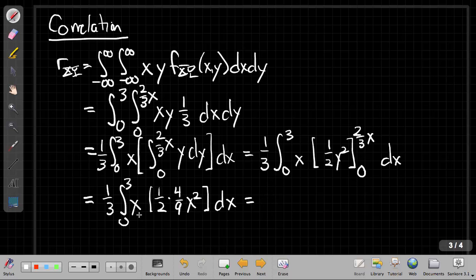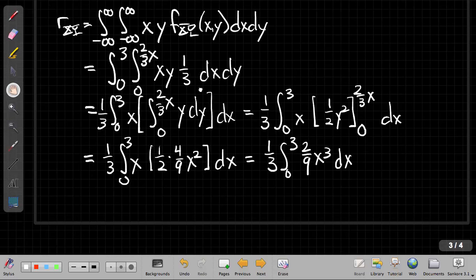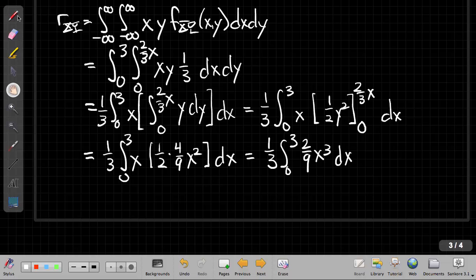So if I combine and collect things here, I end up with 1/3 times the integral from 0 to 3 of, let's see, the 4/9 becomes 2/9. And I have X cubed dx. I can buy myself a little more room here. And what I do, I guess I can pull this all out front. I can say 2/27 integral from 0 to 3 X cubed dx, which is 2/27 times 1/4 X to the fourth from 0 to 3.